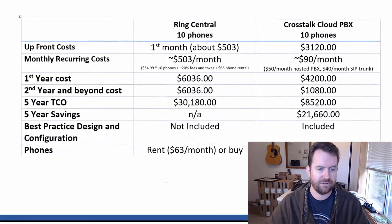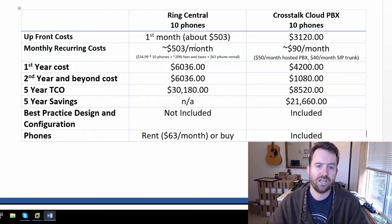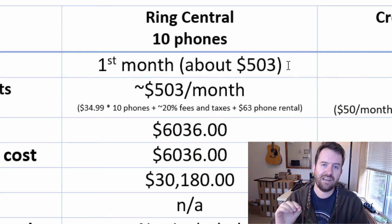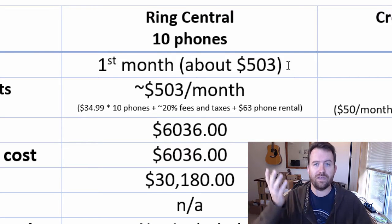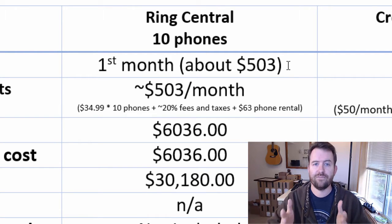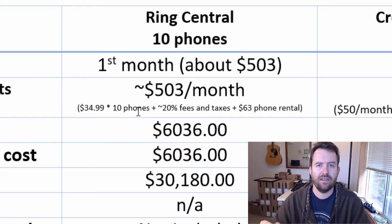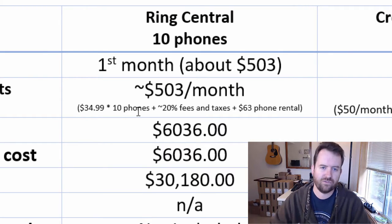So let's take a look at the cost differences. The upfront costs with RingCentral are much lower — they're basically just the first month cost, which comes out to about $503. That is the $34.99 per month for 10 phones. I'm using 10 phones as the example — this is going to be plus or minus depending on the number of phones you have. So your monthly recurring costs are $34.99 times 10 phones. Now add on to that, there's usually about 20% markup in terms of fees and taxes — regulatory fees for E911, fees for DID numbers, all these sorts of fees plus taxes, comes to about 20% on top.